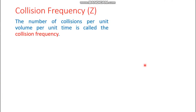Now moving on to collision frequency: the number of collisions per unit volume per unit time is called the collision frequency. The gas molecules are kept at a particular unit volume, and the number of collisions occurring in one second is simply called the collision frequency.